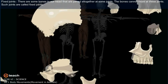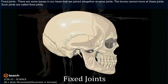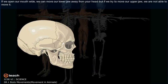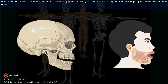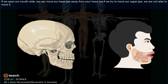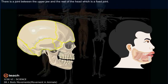Fixed joints: there are some bones in our head that are joined together at some joints where the bones cannot move. Such joints are called fixed joints. If we open our mouth wide, we can move our lower jaw away from our head, but if we try to move our upper jaw, we are not able to. There is a joint between the upper jaw and the rest of the head which is a fixed joint.